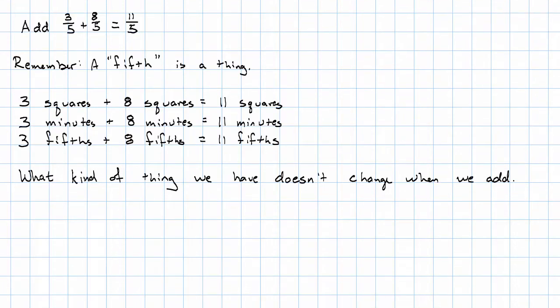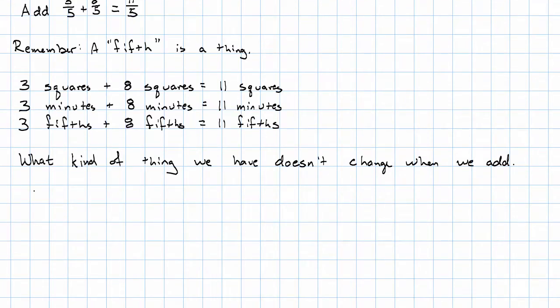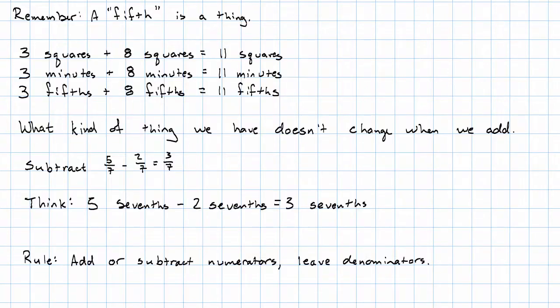Subtraction is the same way. If we wanted to subtract 5 sevenths minus 2 sevenths, we would think 5 things called sevenths minus 2 things called sevenths gives us 3 things called sevenths. In either case, we add or subtract the numerators, we leave the denominators alone.